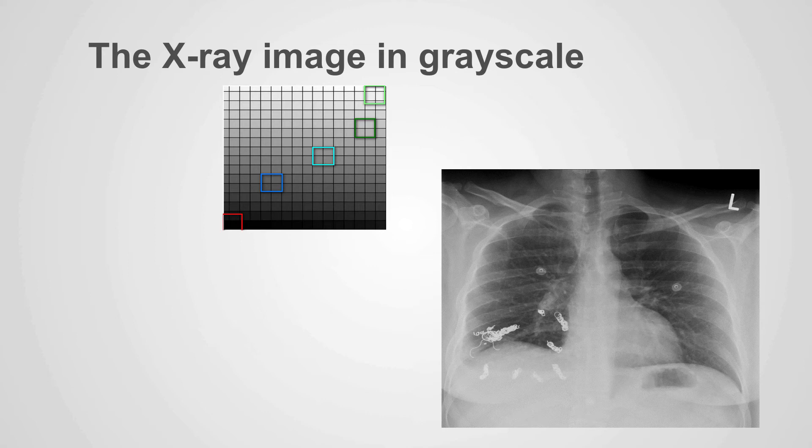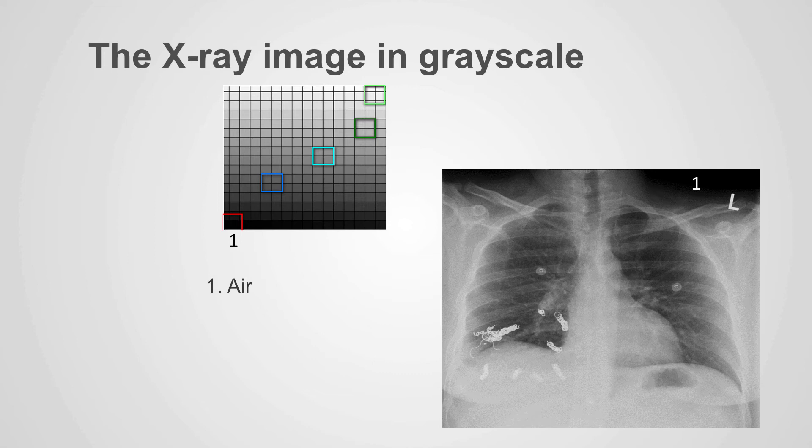On this image, we see the various possible densities that we encounter on an x-ray examination. Let's start by looking at the grayscale possibilities and we see that these range from very black to very white. On one end of the scale is air which is very black and we can identify on this x-ray very black area which is above the shoulders which represents air within the room above the patient. We also recognize that there's air within the lungs.